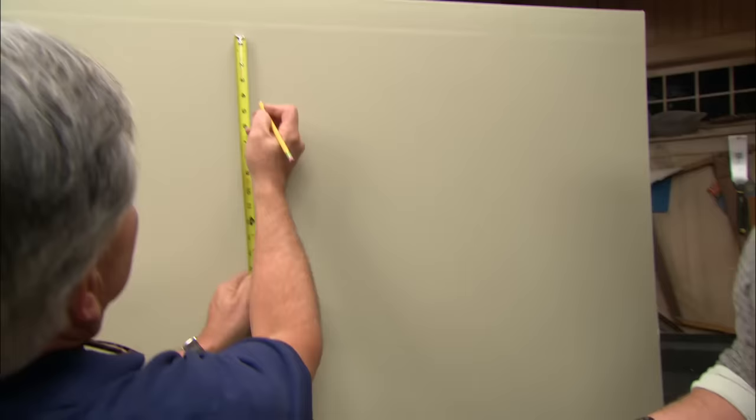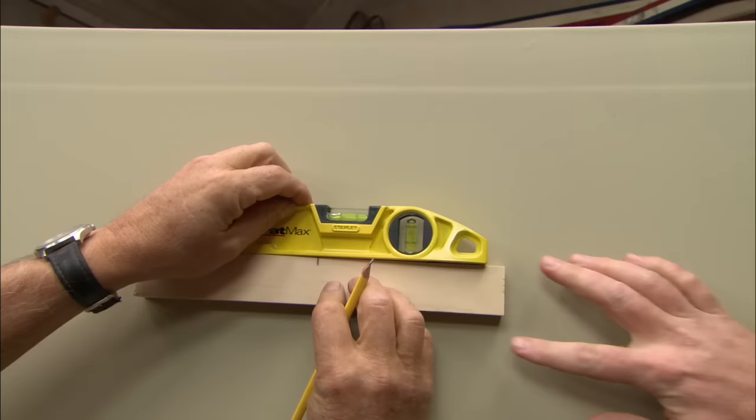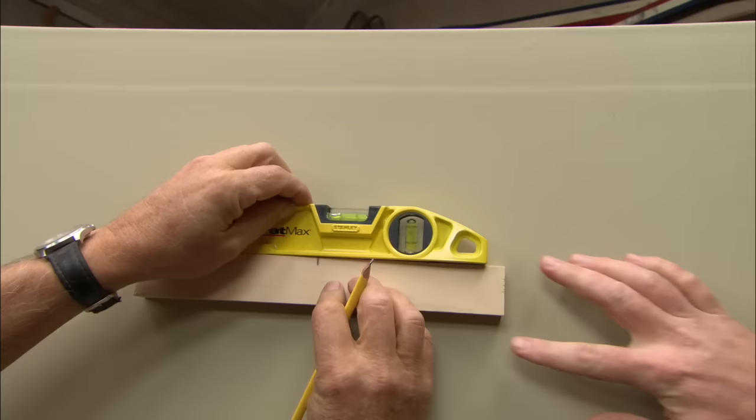All right. So now I measure down from my line on the wall and I make a five-inch mark. I take my scrap of wood with my center line, I line it up here and down, and I mark it right there. Take a little level, make that level, and I mark the end of the corners on each side.